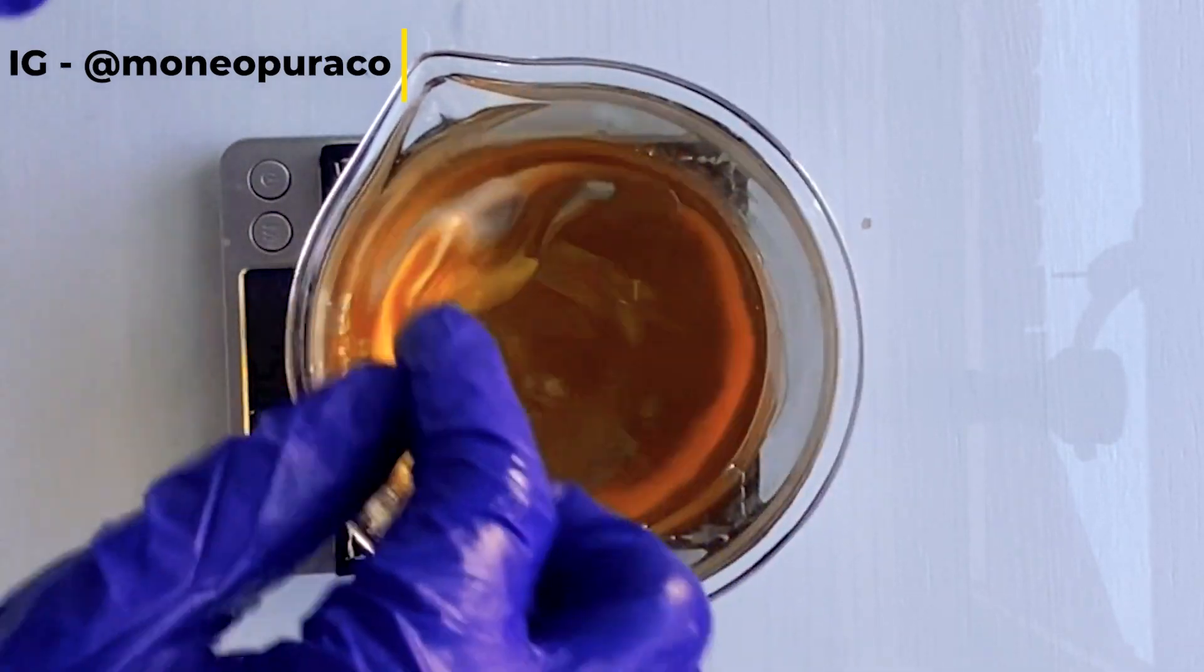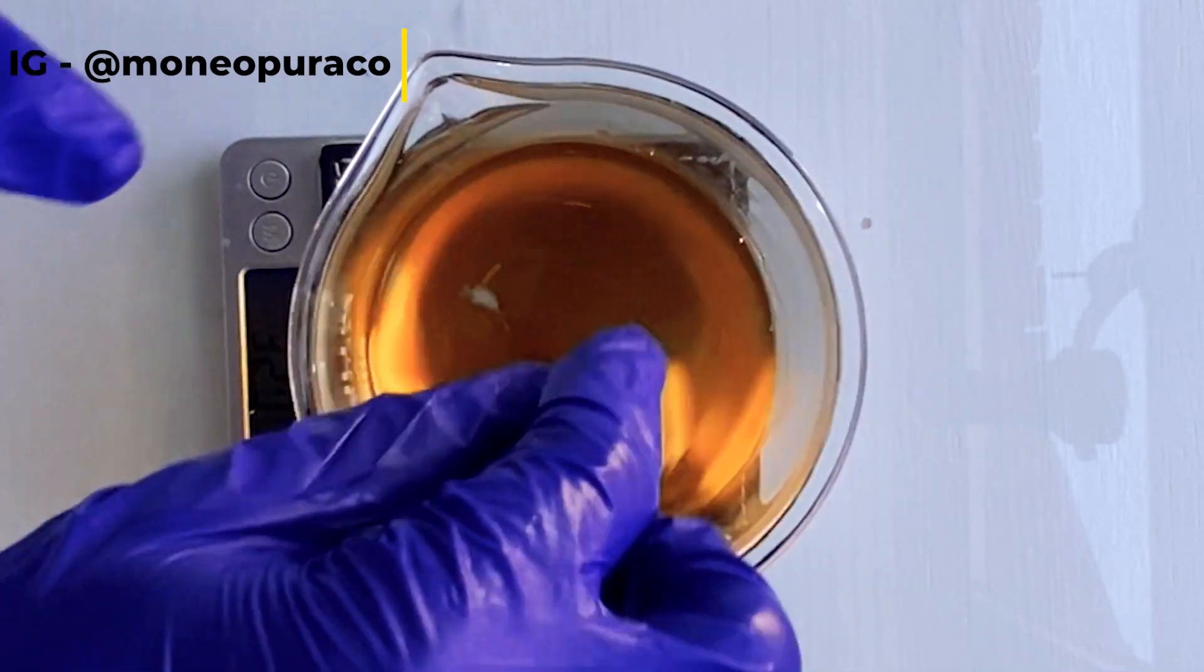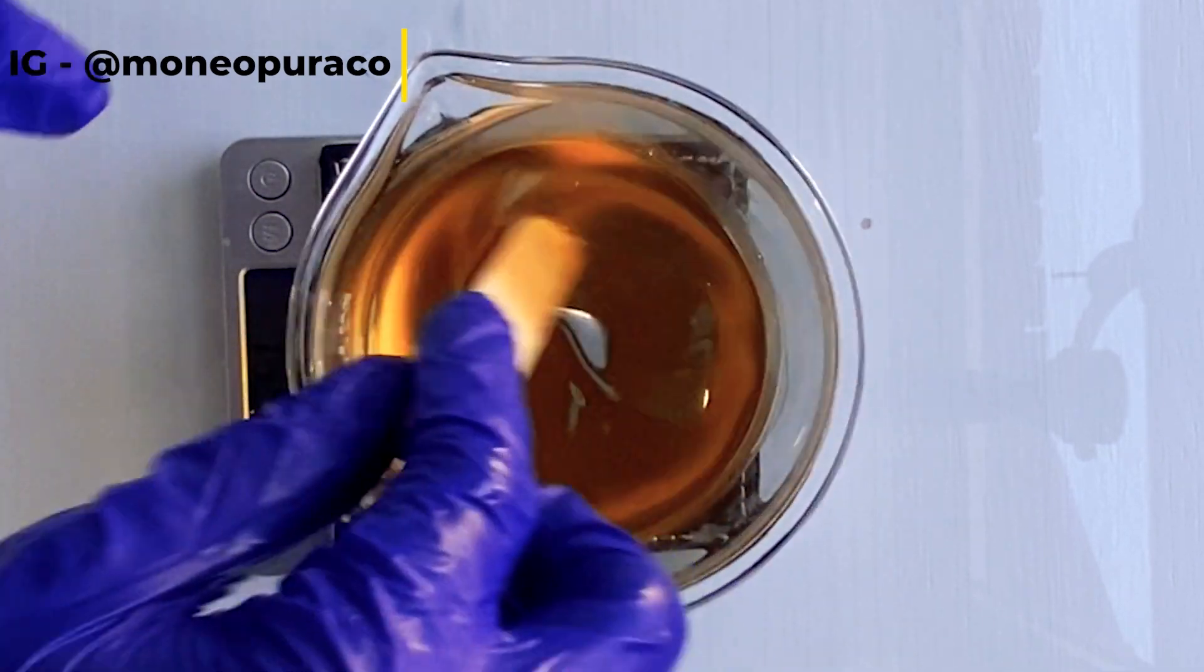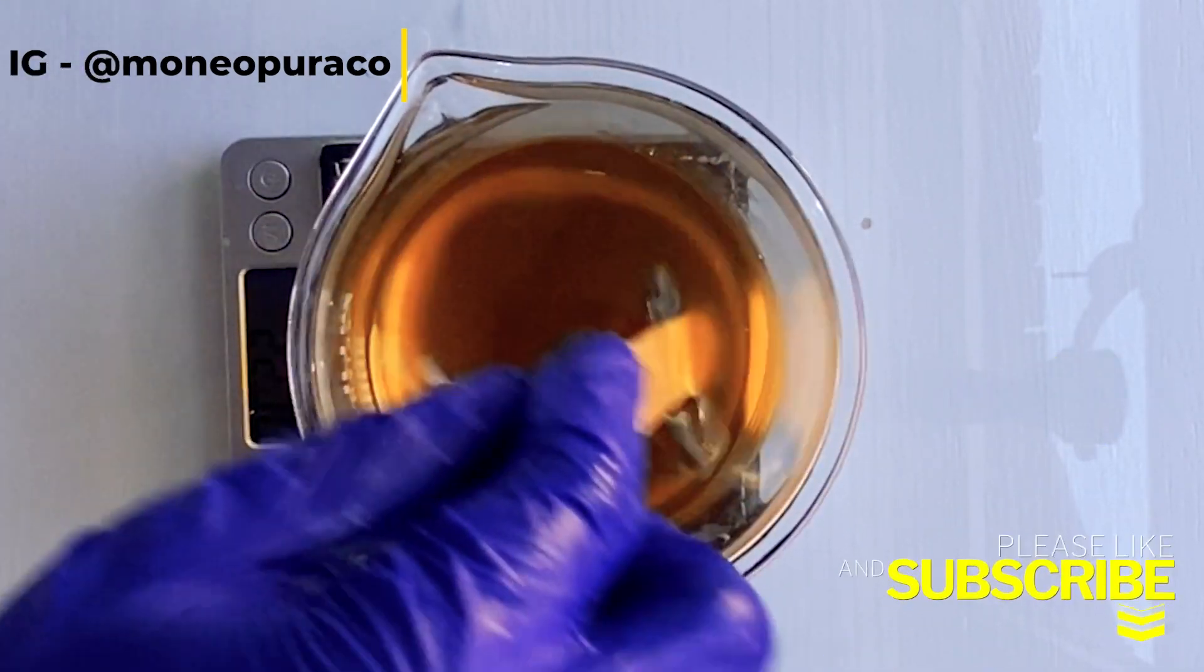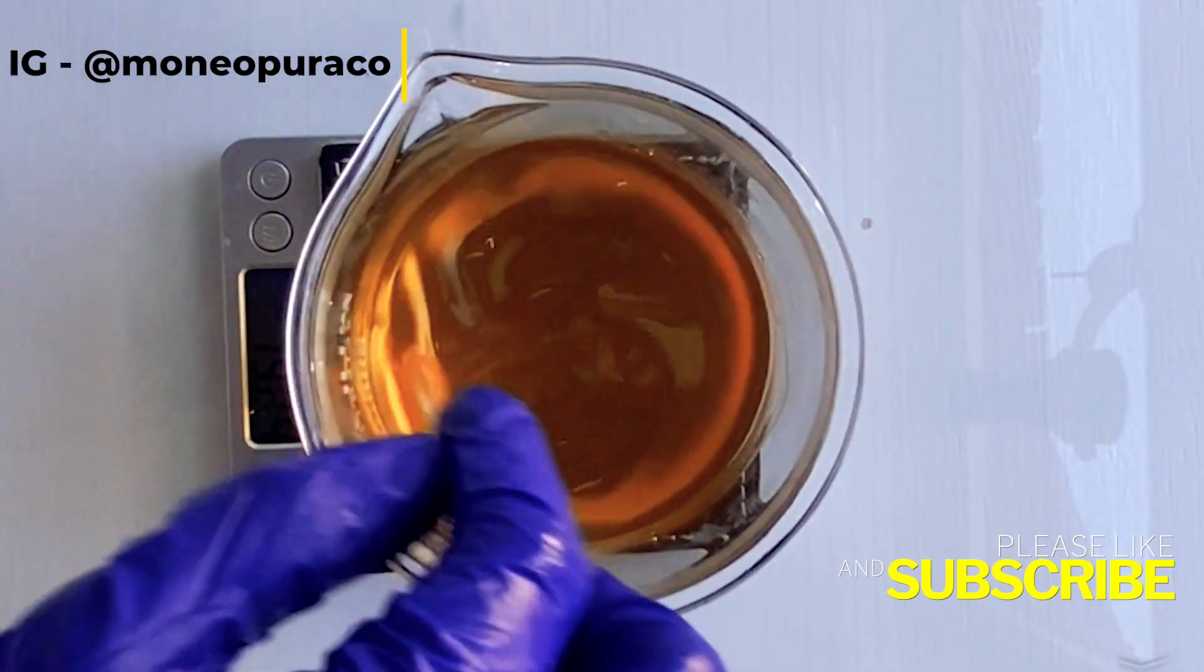And then I'm going to split this into three batches, so I will be making my coconut vanilla, my boozy brunch, and also my mango passion. So I'm going to split this into three and we'll then add our color and our fragrance.